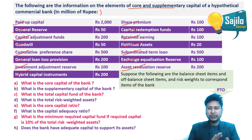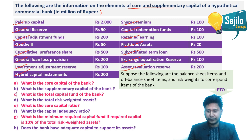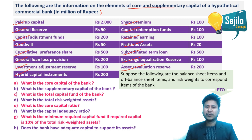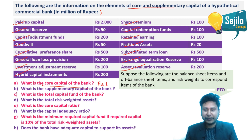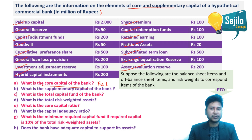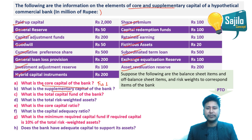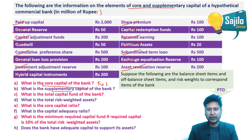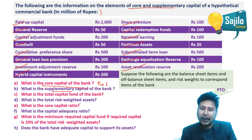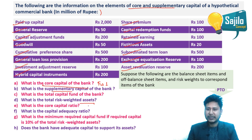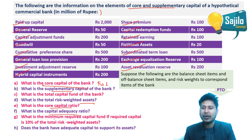Let's get started. We need to find: what is the core capital of the bank — that is Tier 1 capital; then the supplementary capital, or Tier 2 capital; and finally the total capital fund, which is the sum of Tier 1 and Tier 2 capital.